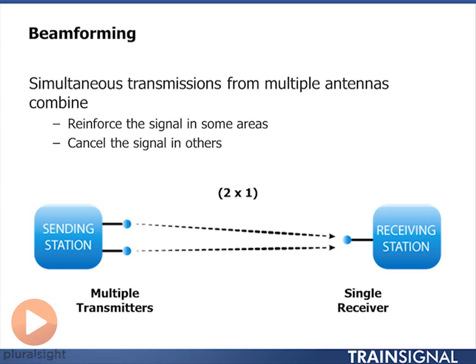If I transmit from multiple antennas and I control the gain and the phase, I can create patterns. Those patterns can be one beam, two beams, or three beams, depending on how many antenna elements I have. I'm able to combine signals from multiple antennas to form beams that reinforce the signal towards specific users. And just like the pebbles in a pond, not only can I form crests — the beams towards users — I can also form nulls and cancel out interference from other users.